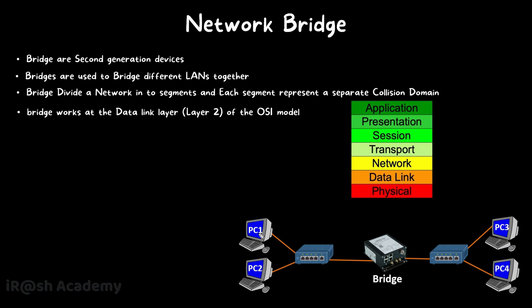When a LAN is connected to a network bridge, it stores all the MAC addresses of the network devices associated with that network. It stores the MAC addresses of PC1 and PC2 at Interface 1, and the MAC addresses of PC3 and PC4 at Interface 2. When devices start sending traffic, the bridge checks the destination MAC address and forwards the traffic to the appropriate interface — for example, if the destination is PC4, it forwards to Interface 2.